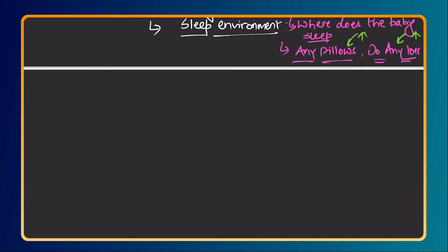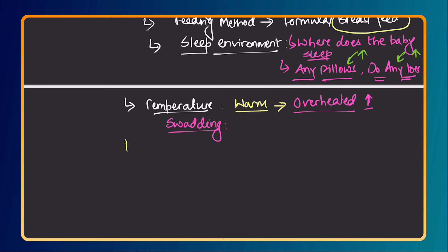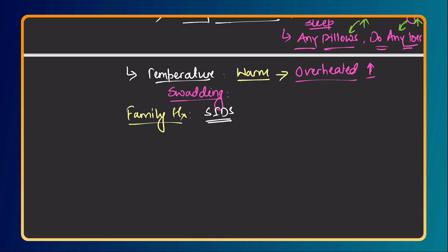Also ask about temperature. Warm temperature is protective, but if the room is overheated it can increase the risk. Find out the general temperature of the room where the baby sleeps, and also ask about swaddling — how the baby is wrapped — to check if it is done properly. Finally, ask about family history: whether there is any family history of SIDS, as having SIDS in the family increases the risk of subsequent SIDS.